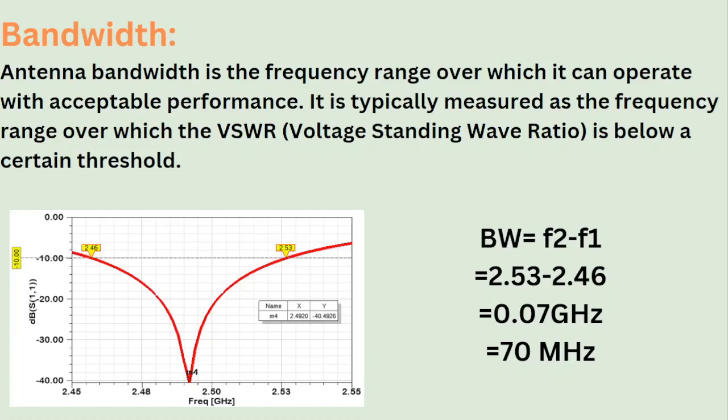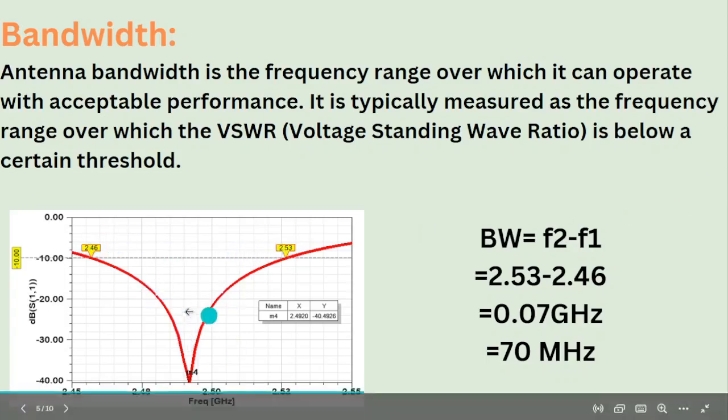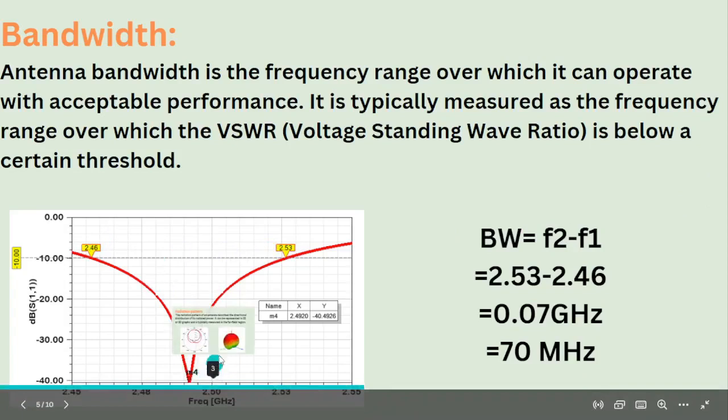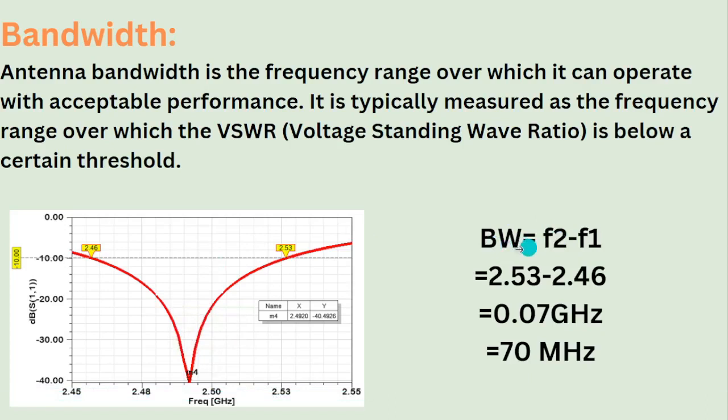It is compared with the reflection coefficient, and the same way we can get here at minus 10 dB the upper frequency and lower frequency as 2.53 and 2.46 for this particular graph for a center frequency of 2.49 gigahertz. So now the bandwidth is calculated from this graph as 2.53 minus 2.46, which leads to 0.07 gigahertz, which is nothing but 70 megahertz for the given antenna.